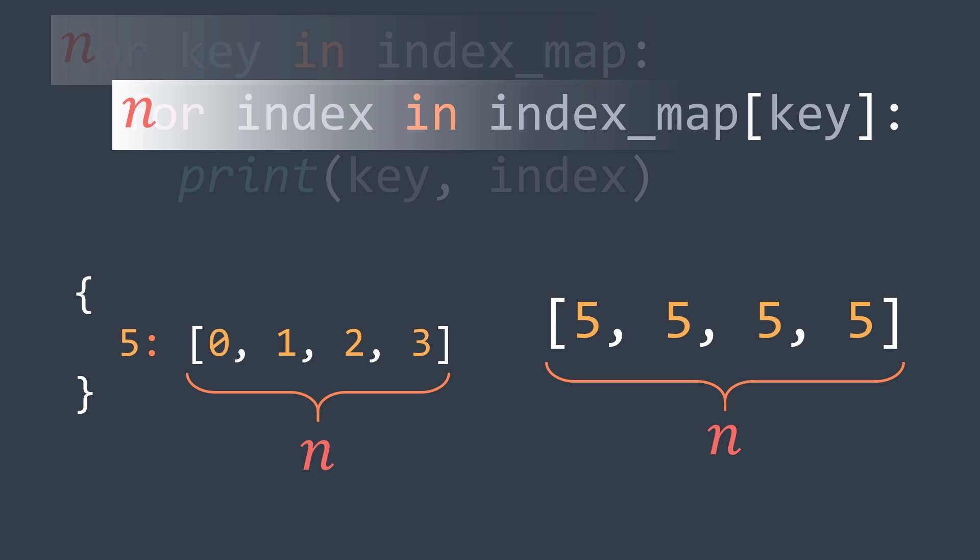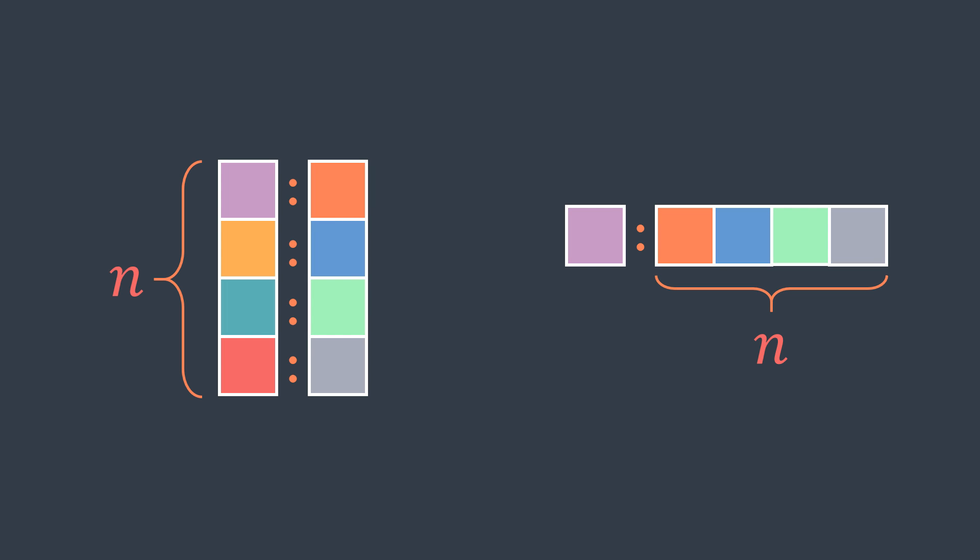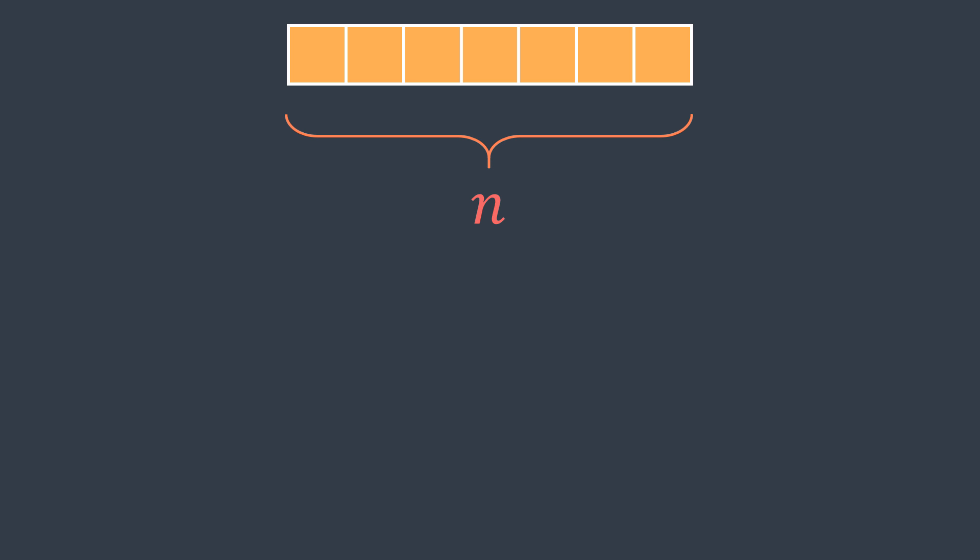Now that we've figured out the number of repetitions of each loop in the worst case, we might think we just multiply and get O(n²) time complexity. But here comes the tricky part: in reality, the case where all values are distinct and the case where one value appears at n indexes can't happen at the same time, because the values in the hash map represent indexes of the array, and an array of n elements has n indexes — not n squared.